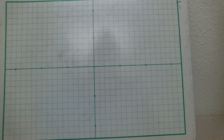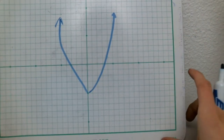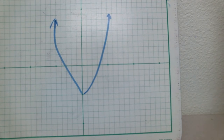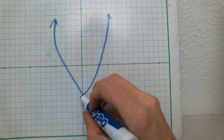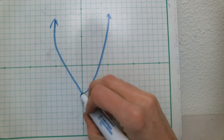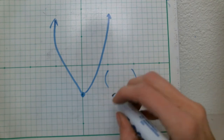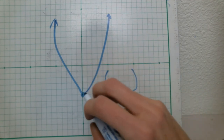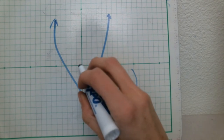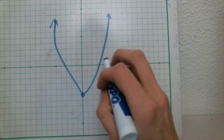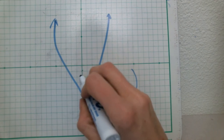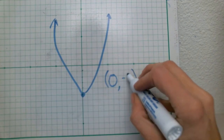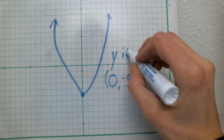Now let's look at y-intercepts on a similar graph. For the y-intercept, I look at where the graph crosses the y-axis. Right here is the only place this graph crosses the y-axis. My x value is 0 and my y value is negative 5. So the y-intercept is at the ordered pair (0, negative 5).